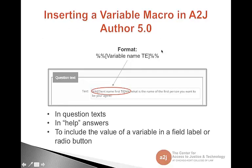So let's talk about how to insert a variable macro in A2J Author 5.0. The format is double percent sign, open bracket, a variable name, and close bracket, double percent sign. You'll see that in the question text editor we're using that format and then asking our question. Please note that this format is used only in question texts, help answers, and to include the value of a variable in a field label or radio button. When we talk about signposts, you don't have to use the double percent format.